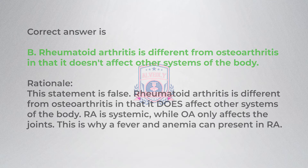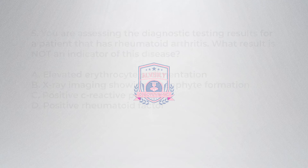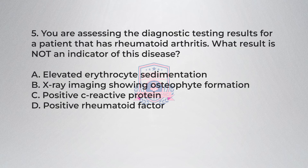Correct answer is B. Rationale: This statement is false. Rheumatoid arthritis is different from osteoarthritis in that it does affect other systems of the body — it is systemic, while osteoarthritis only affects the joints. This is why fever and anemia can present in rheumatoid arthritis.